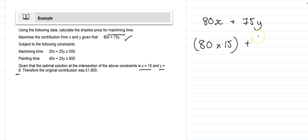We can calculate the optimum contribution: 80 times 15 and 75 times 8, which comes to £1,800 contribution from our optimal solution. The constraints in that optimal solution are machining time and painting time.